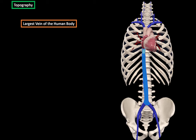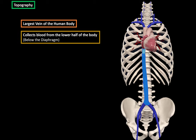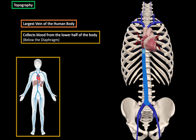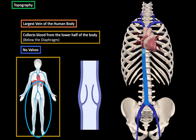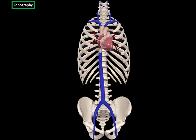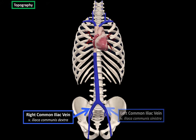The inferior vena cava is the largest vein in the human body. It collects blood from the lower half of the body, below the diaphragm. It has no valves — veins usually have valves to prevent the backflow of blood, but the inferior vena cava, similar to some other large veins of the body, doesn't have any. The inferior vena cava starts at the junction of the right and the left common iliac veins at the level of L5.